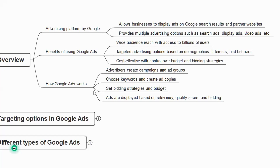Ads are displayed based on relevancy, quality score, and bidding. Once you start running an ad, Google Ads will help you understand the strength of your ad — whether it is average, incomplete, or good.